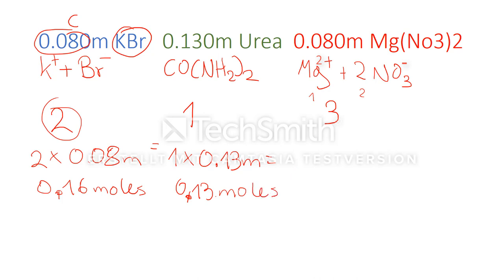Last but not least, magnesium nitrate. We have to multiply three times 0.08, and this will leave us with 0.24 moles.